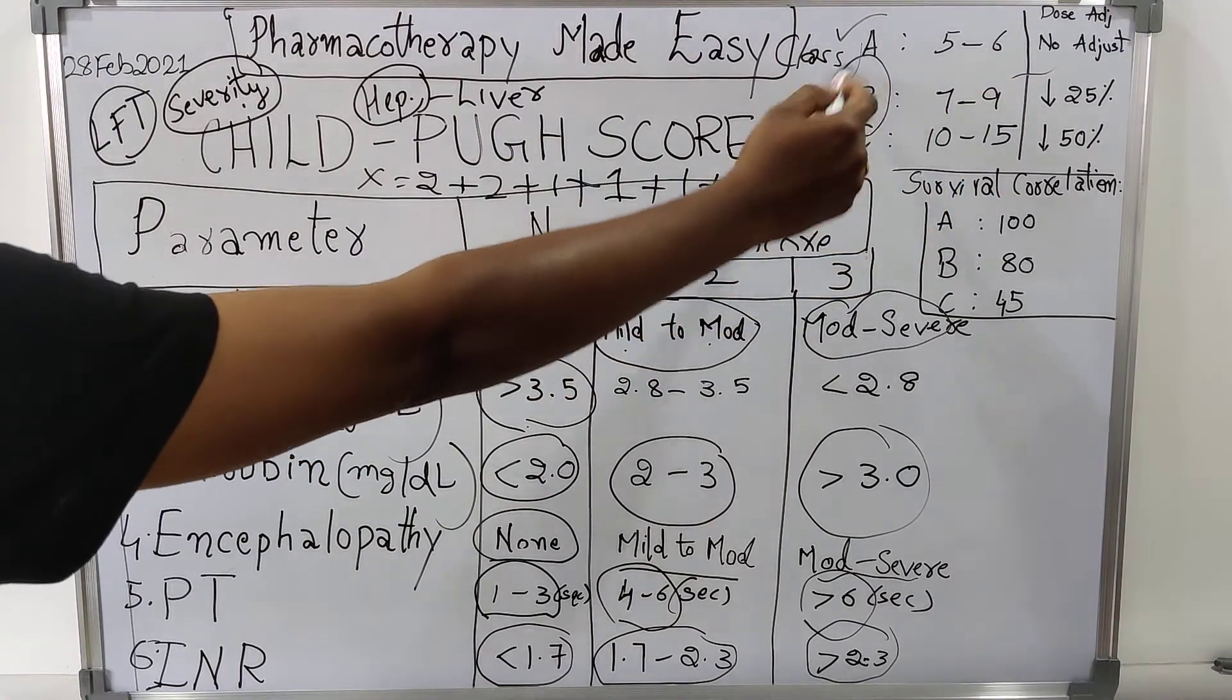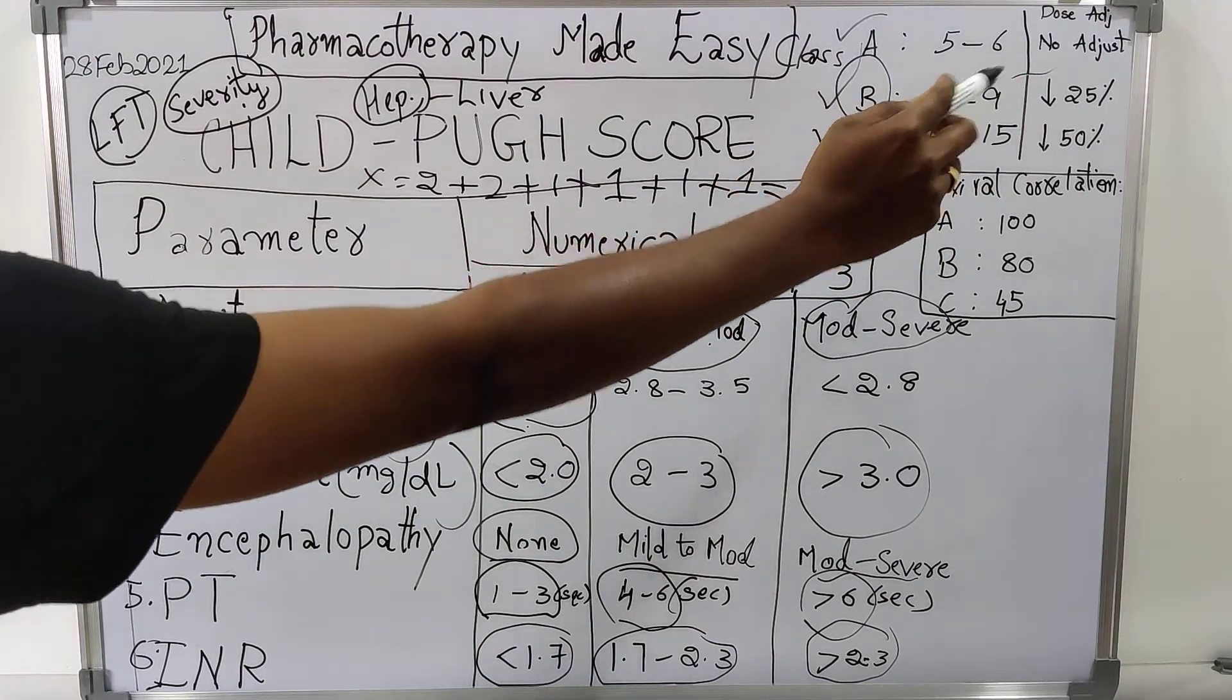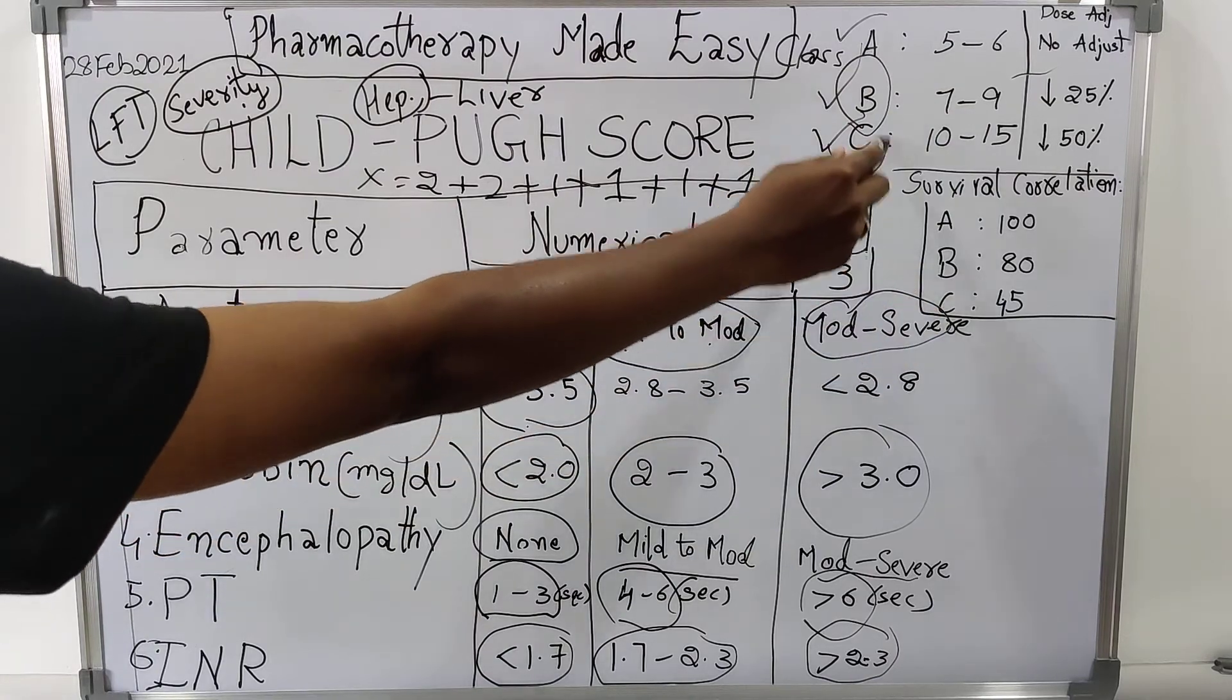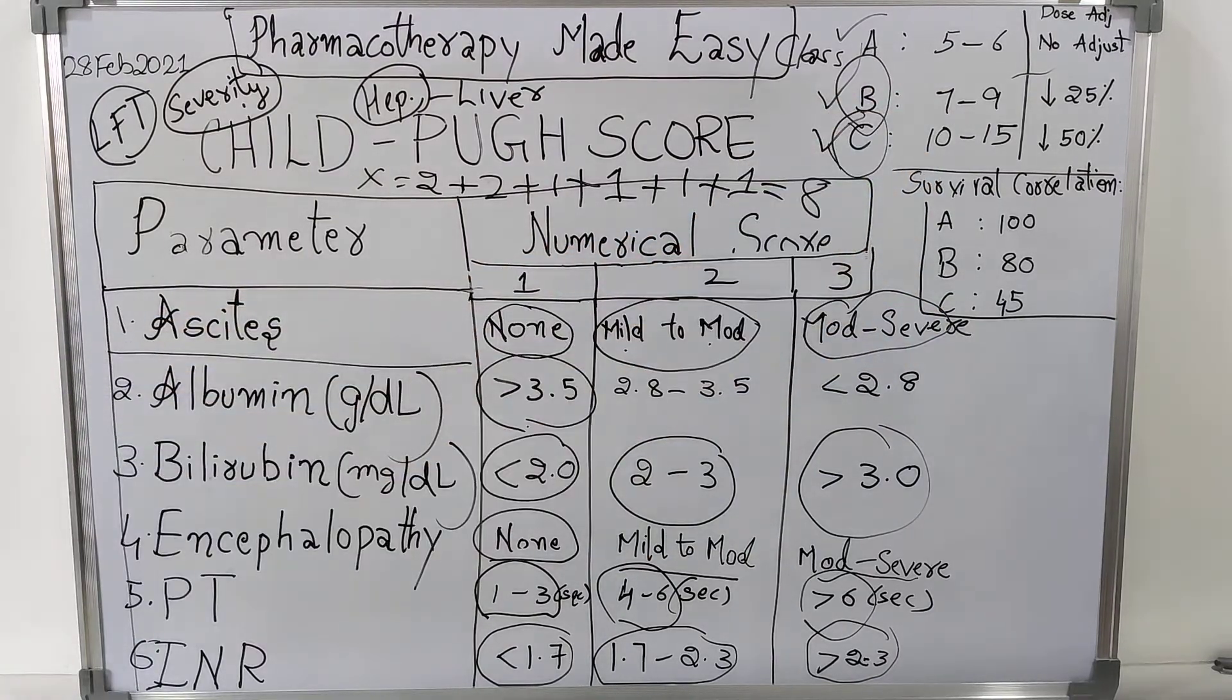If patient comes under class B, dose must be reduced by 25%. And if patient comes under class C, dose must be reduced by 50%.